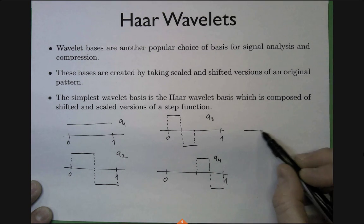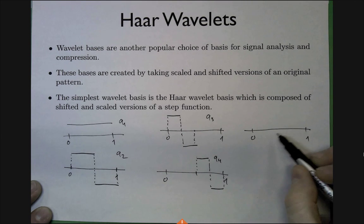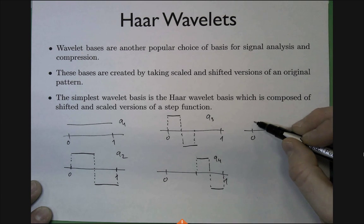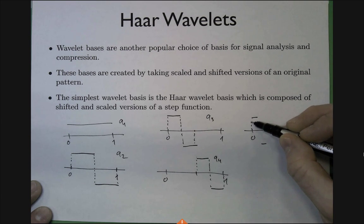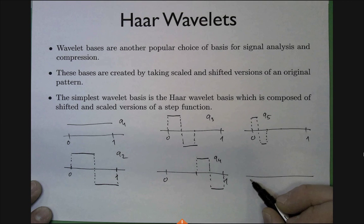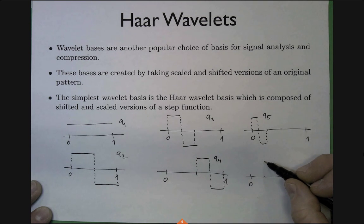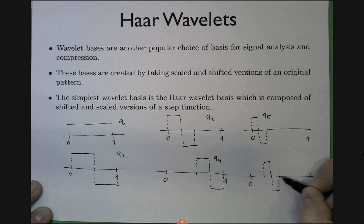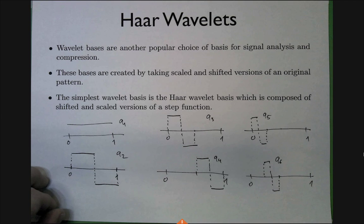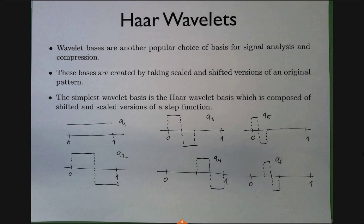The pattern continues: q_5 splits the interval into fourths and does the same step. q_6 is the same thing shifted to the second quarter. q_7 and q_8 continue translating across the interval. You keep doing this until you run out of resolution — that's essentially the idea of the Haar wavelet. It's not particularly smooth but it's the most basic idea, and more advanced wavelets use the same concept of scaled and shifted patterns.